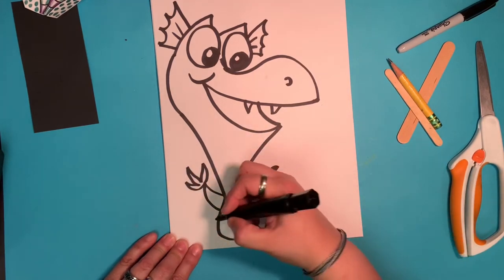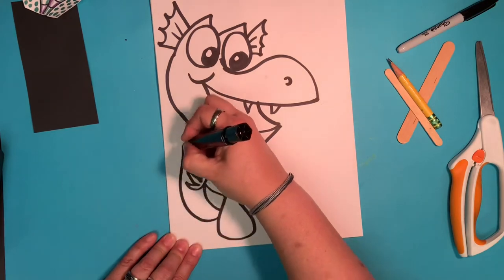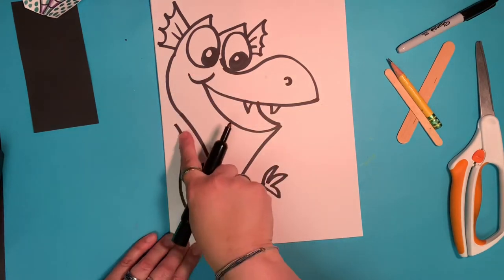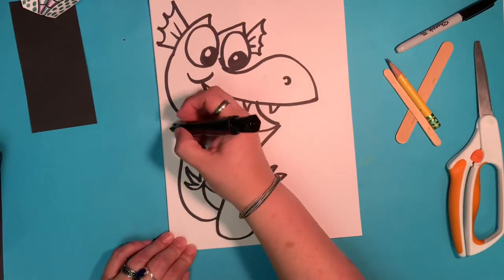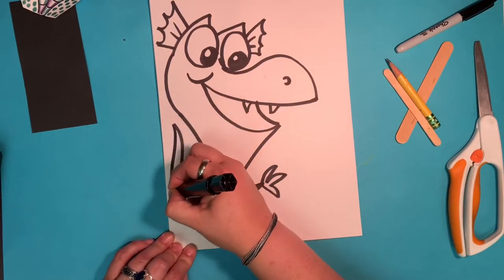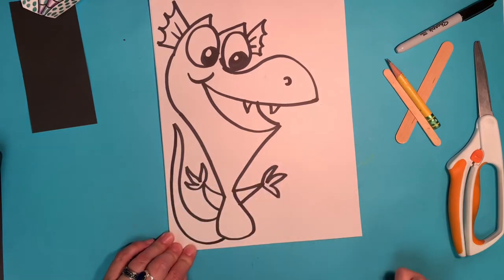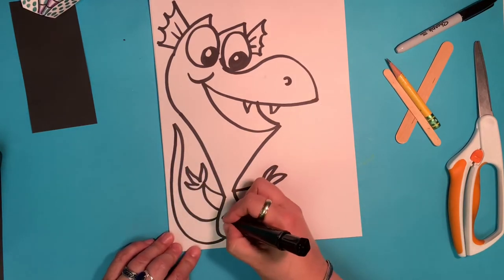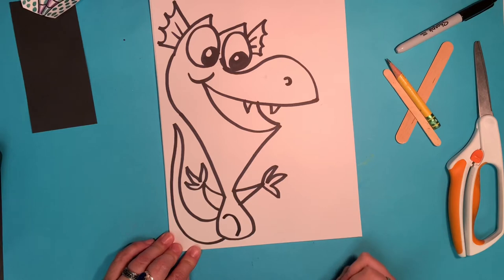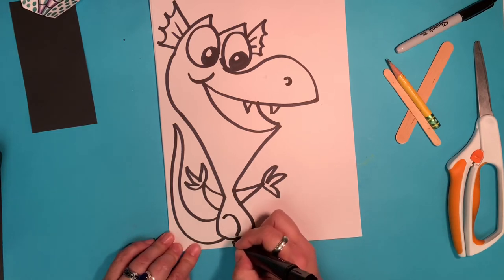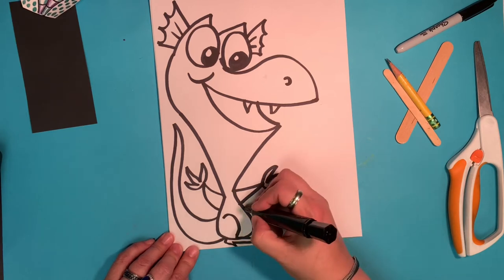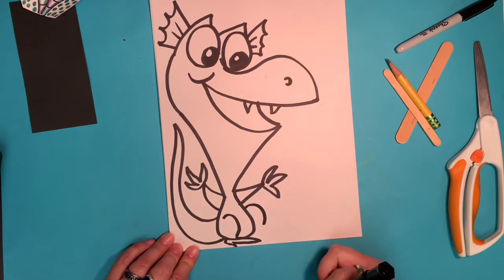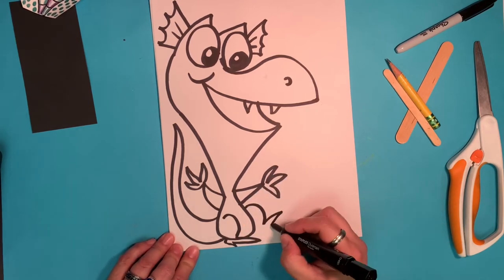And then we're going to give him a nice tail that is super skinny at the end. Okay, so we want it thin on the end of the tail. And then bring it back to be thicker on his behind. There you go. We're going to draw a curve. And then add some zigzag toes. And then a curve and some zigzag toes.